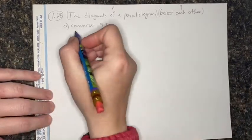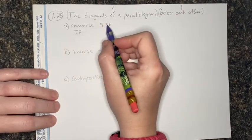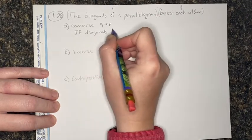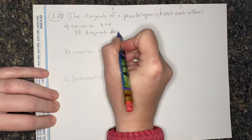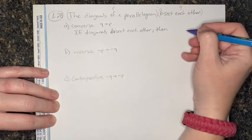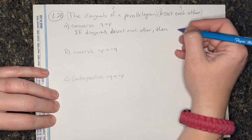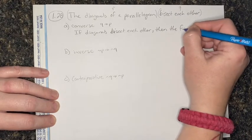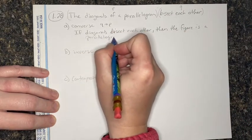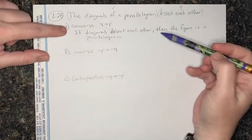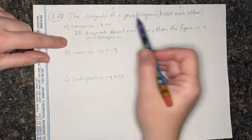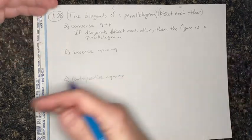For our converse, we want if Q, then P. So: if diagonals bisect each other, then the figure is a parallelogram. We've switched it around — we put our bisecting of diagonals first. If diagonals bisect each other, then the figure is a parallelogram.